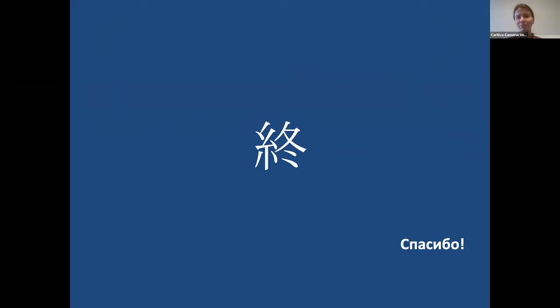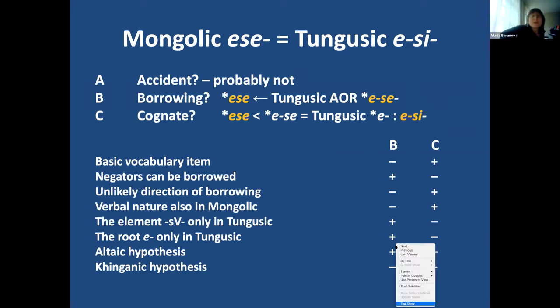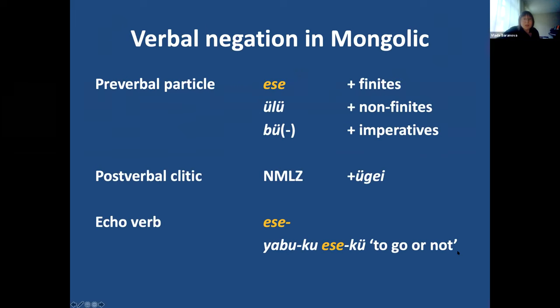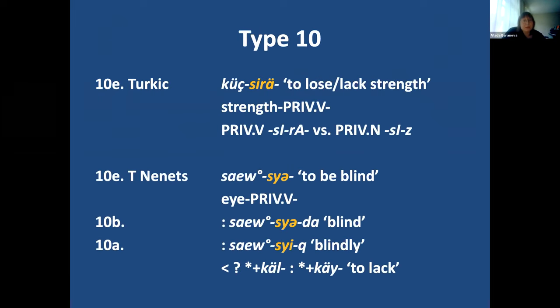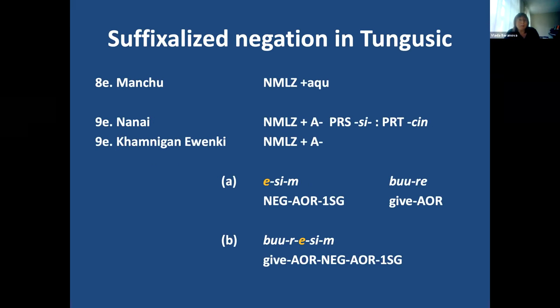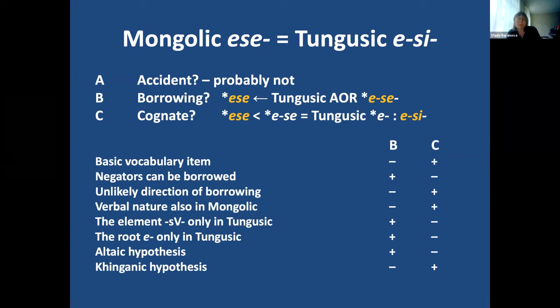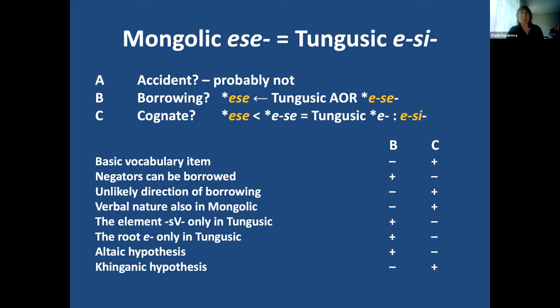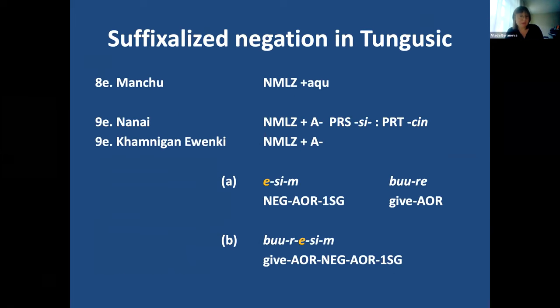Thank you very much for a very interesting talk. I have a question concerning example 10 — about the suffix derived according to your explanation from a negative marker. I have a question because there is always a propositional marker. Would you describe how it can be cliticized and then suffixed and grammaticalized? Do you have any evidence for a postpositional use of *ese* in Mongolic?